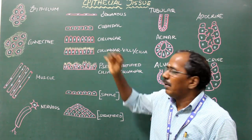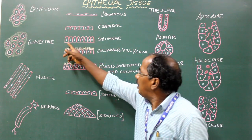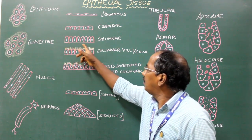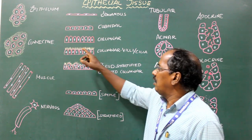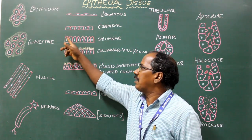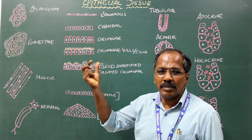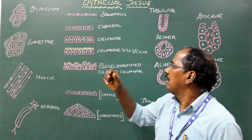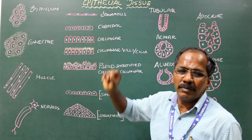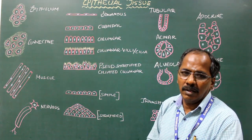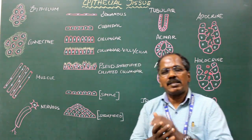Simple columnar epithelium consists of a single layer of columnar cells, meaning the height of the cell is larger compared to the width. The cells are arranged on the basement membrane. Examples include the stomach and large intestine.